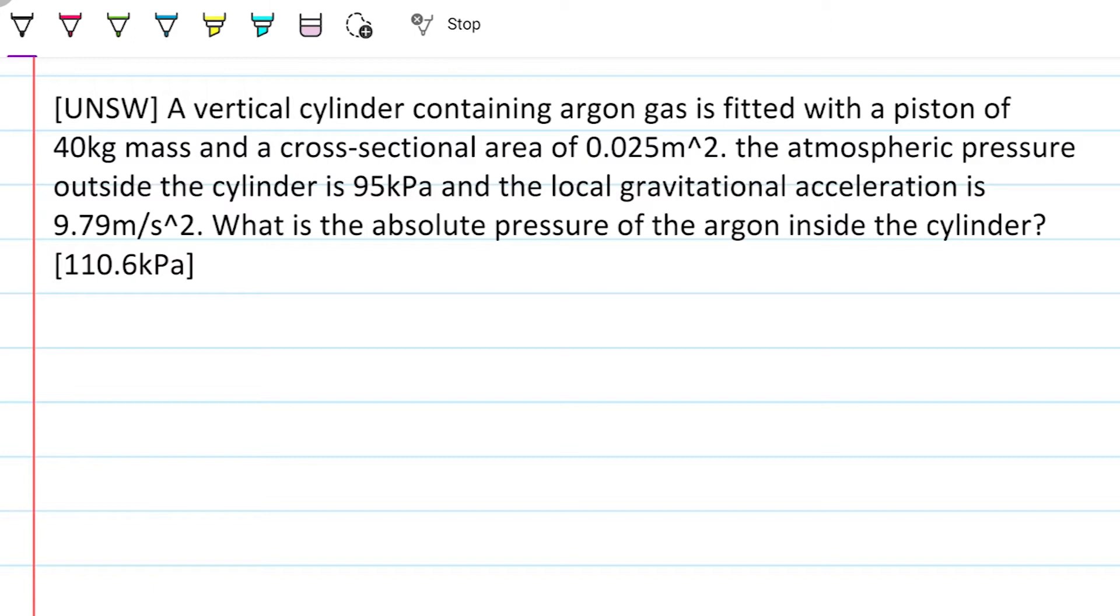A vertical cylinder containing argon gas is fitted with a piston of 40 kilograms mass and a cross-sectional area of 0.025 meters squared. The atmospheric pressure outside the cylinder is 95 kilopascals and the local gravitational acceleration is 9.79 meters per second squared. What is the absolute pressure of the argon inside the cylinder?